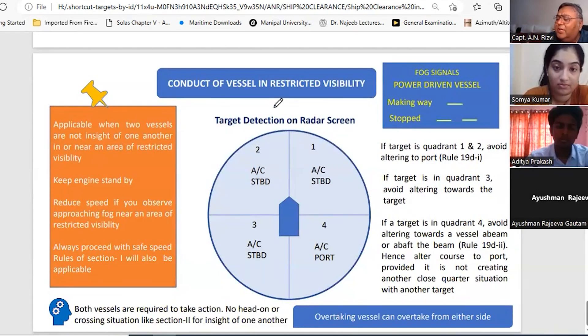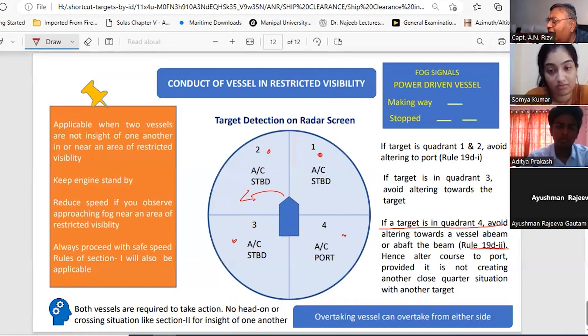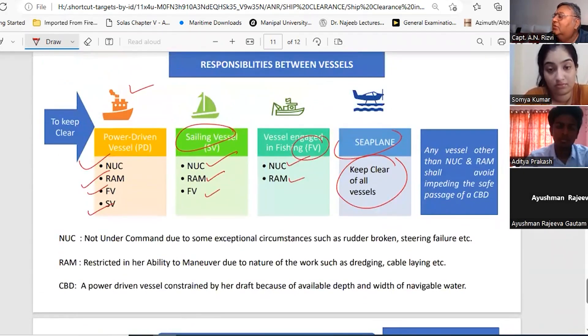Then rule 19, conduct of vessel in restricted visibility. Basically this is applicable when two vessels are not in sight of one another, in or near an area of restricted visibility. You need to keep engine standby, reduce speed. Even if you observe fog, you are supposed to reduce speed. And always proceed at safe speed. If you are detecting other target on the radar, if you see the target on first quadrant, alter to starboard. If you see the target on second quadrant, again alter to starboard. If you see the target in third quadrant, again alter to starboard. And if you see the target in quadrant number four, you don't alter to starboard. Rather you can alter to port, because it says clearly if the target is in quadrant four, avoid altering towards a vessel abeam or abaft the beam. That is rule 19D second. Hence alter course to port, provided it is not creating another close quarter situation. And overtaking - well overtaking, you can overtake from either side, that is not a problem. And the fog signal - making way, one prolonged blast. And if it is stopped, then two prolonged blasts. This is about your restricted visibility steering and sailing rule.